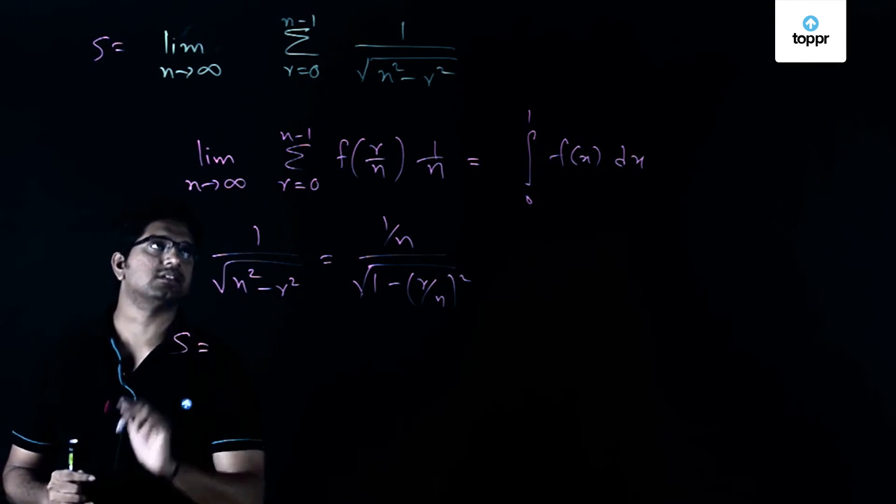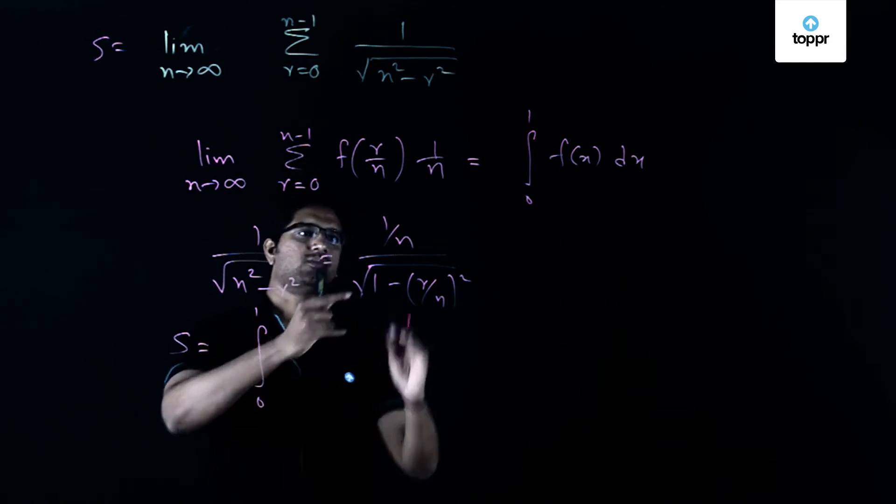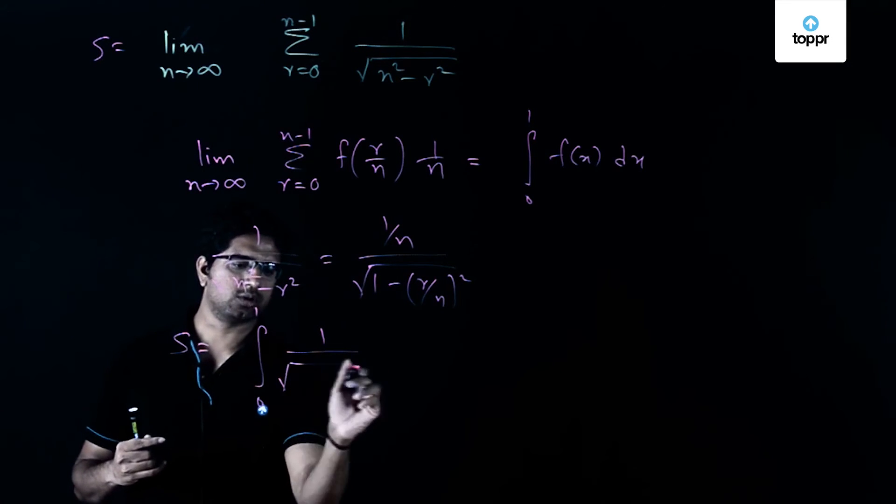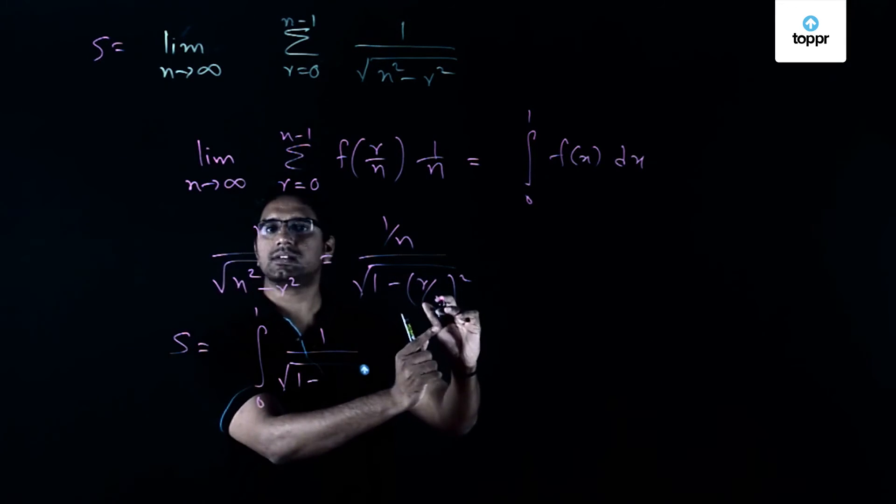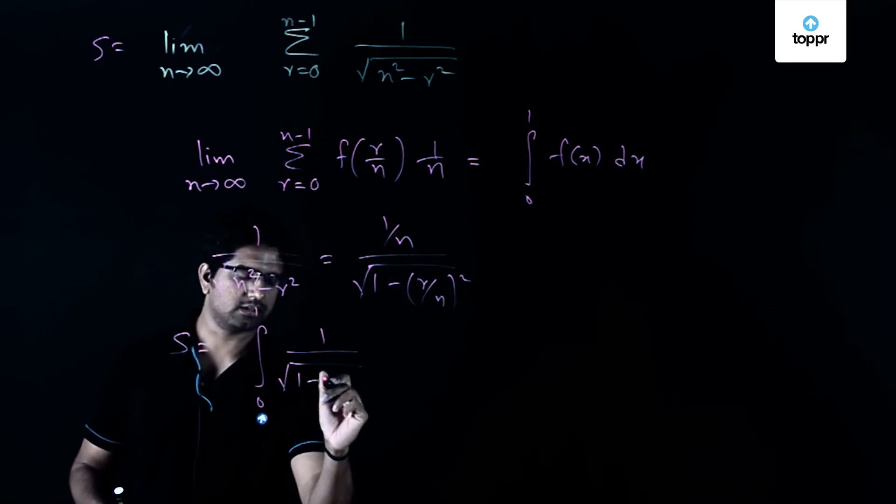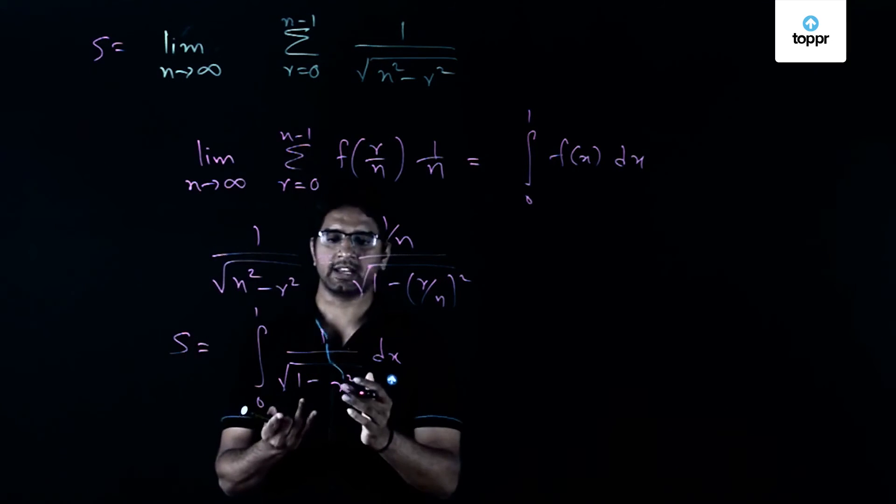Hence the given sum, if I call it as s, I can write s is actually equal to the integral of 0 to 1, and the function is 1 by square root of 1 minus x square dx. Wherever r by n occurred you have to substitute x. This is a well-known integral.